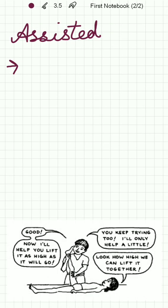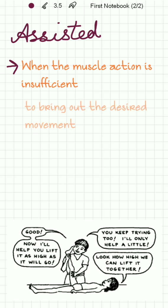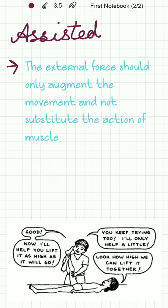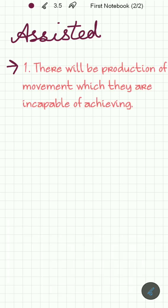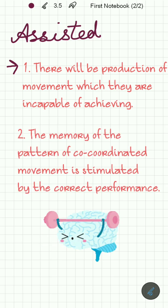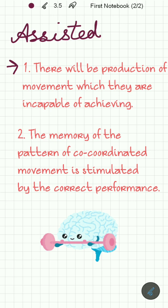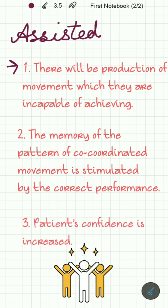Assisted exercise is when the muscle action is insufficient to bring out the desired movement and an external force helps in it. Two things should be kept in mind: first, the external force should only augment the movement and not substitute the action of the muscle; second, as the power of the muscle increases, the assistance must decrease. The effects and uses are: production of movement which the patient is incapable of achieving, the memory of the pattern of coordinated movement is stimulated by correct performance, and the patient's confidence is increased.